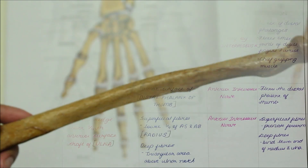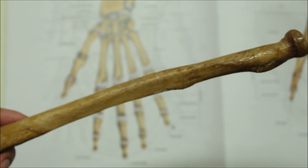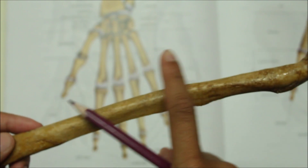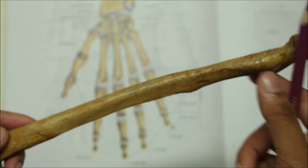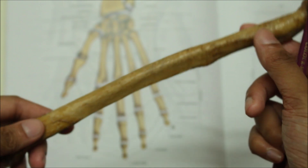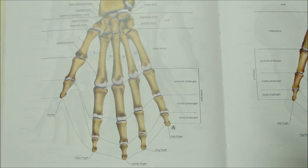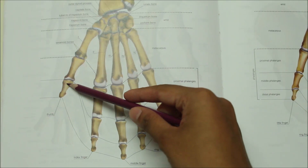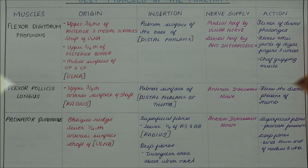As a whole, the flexor pollicis longus originates from the upper three-fourths of the anterior surface of the shaft of the radius and inserts into the palmar surface of the distal phalanx of the thumb.